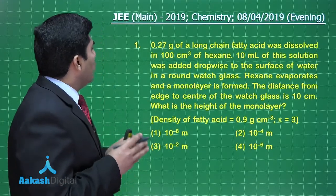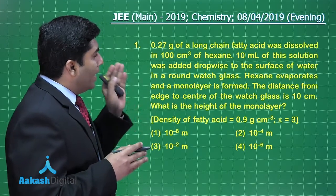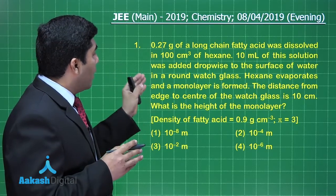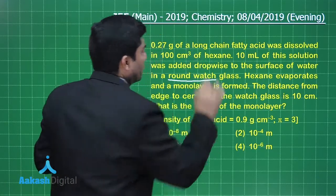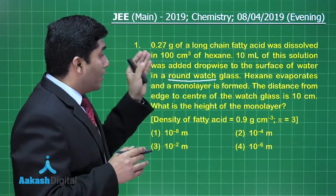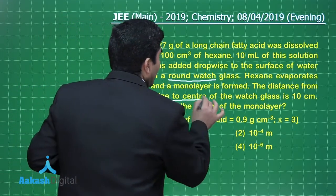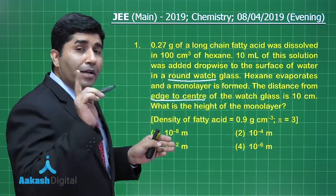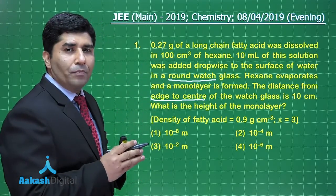In question number one, 0.27 grams of a long-chain fatty acid was dissolved in 100 cm³ of hexane. 10 ml of this solution was added dropwise to the surface of water in a round watch glass. The important thing here is the round watch glass — hexane evaporates and a monolayer is formed. The distance from the edge to the center is the radius of that watch glass, so 10 centimeters is the radius. He is asking: what is the height of the monolayer?